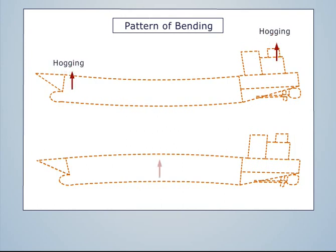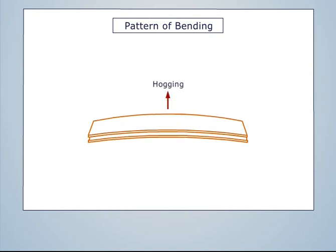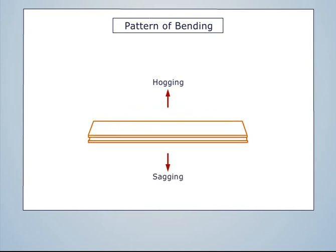Same is applicable to beams. When load is applied, hogging describes a beam which curves upwards, and sagging describes a beam which curves downwards.